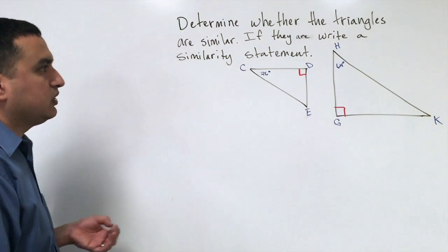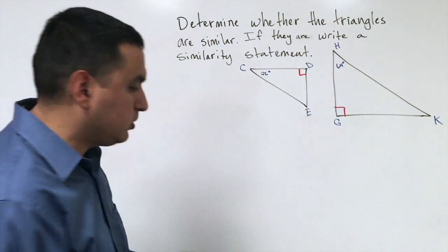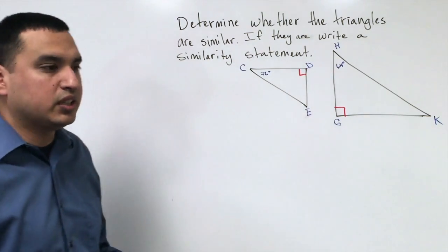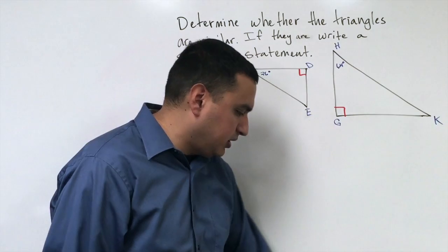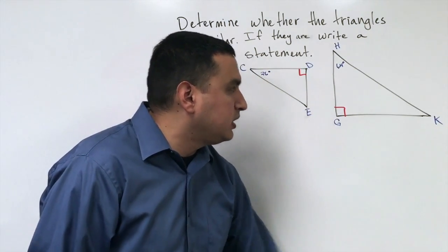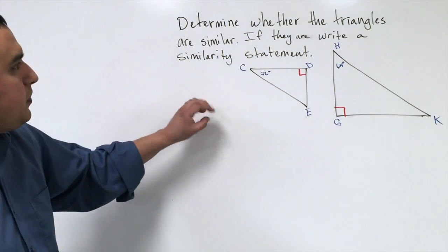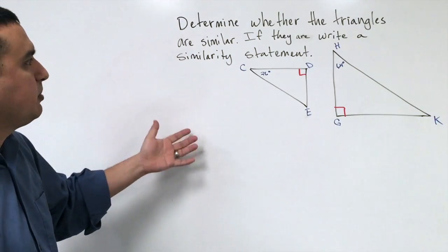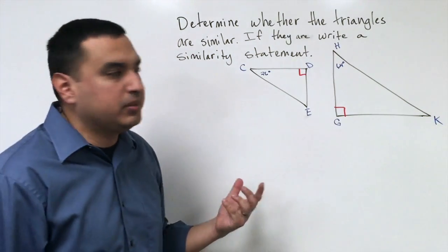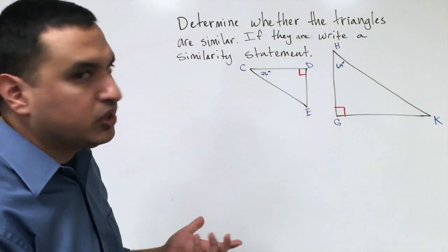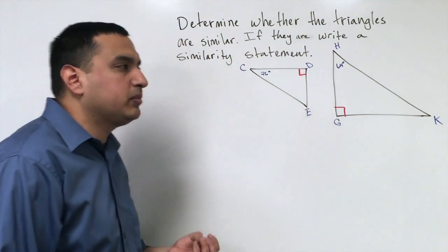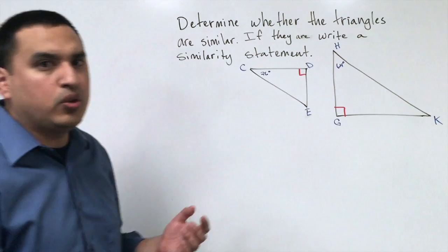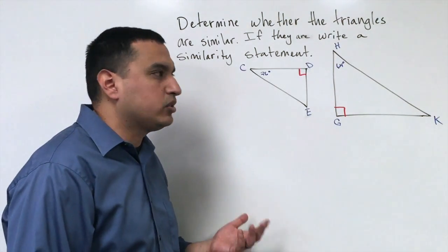Today our focus is talking about similar triangles. So it turns out that there's a shortcut, or several shortcuts, to determine triangle similarity. It turns out one of the shortcuts is what's called the angle-angle similarity theorem, and that just says that you only need two pairs of angles to be congruent.